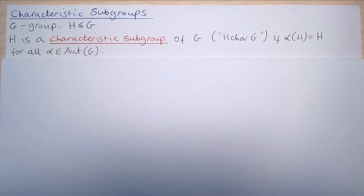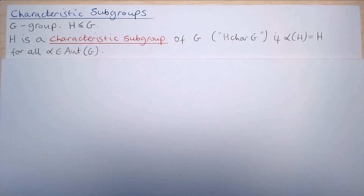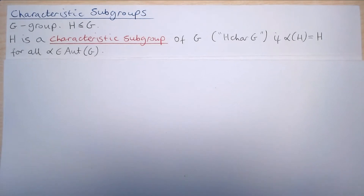Welcome to this fourth part in a series on characteristic subgroups. In the previous parts we defined a characteristic subgroup, proved some basic properties, and then looked at a few examples. In this video we will look at how the characteristic subgroup relation on subgroups of a group interplays with the normal subgroup binary relation on the subgroups of a group.